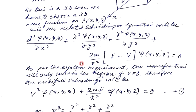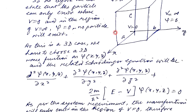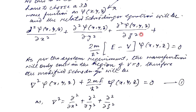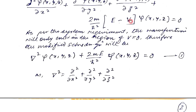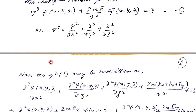We have to modify the Schrödinger equation for this potential field, because the particle only exists where v equals to 0, and where v equals to infinity, psi equals to 0. So we must set v equals to 0, and the equation reduces accordingly. The del squared here is the Laplacian operator, and its form in the Cartesian coordinate system is the sum of the second partial derivatives with respect to x, y, and z.